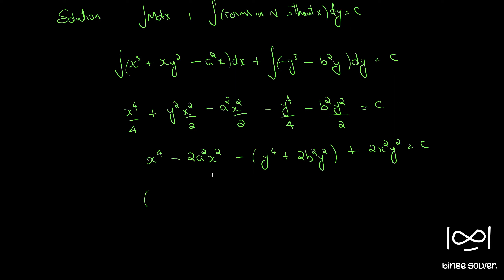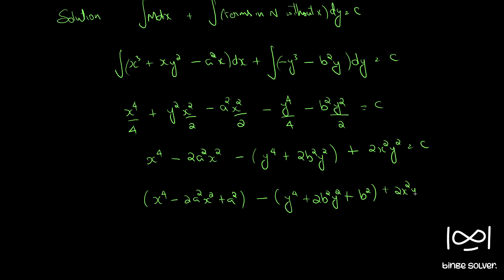We can also write this as x⁴ − 2a²x² + a⁴ − y⁴ + 2b²y² + 2x²y² = c1, where c1 = c + a⁴ − b⁴.